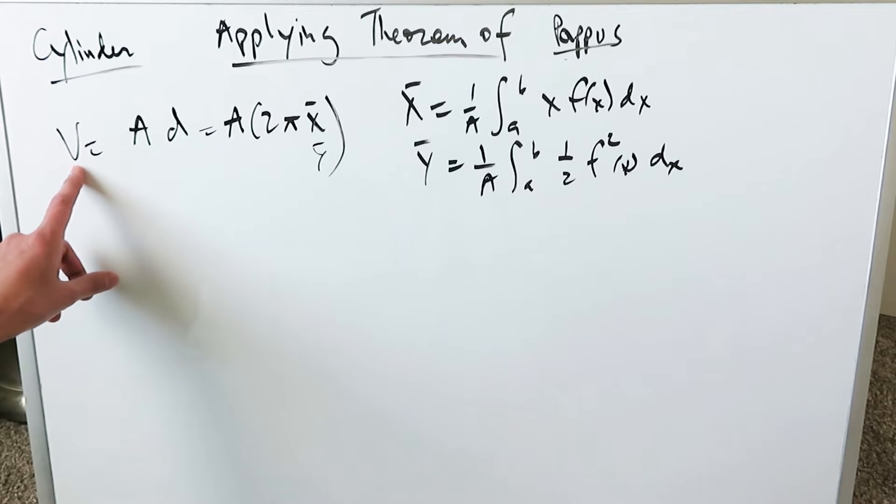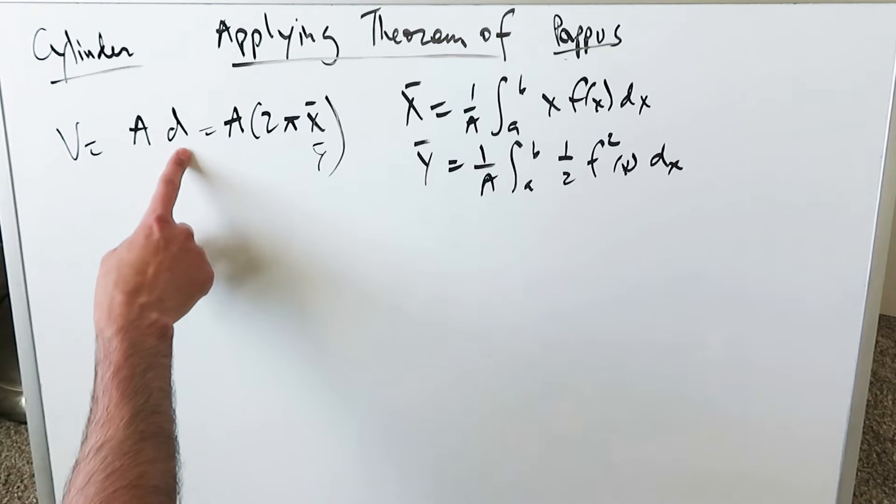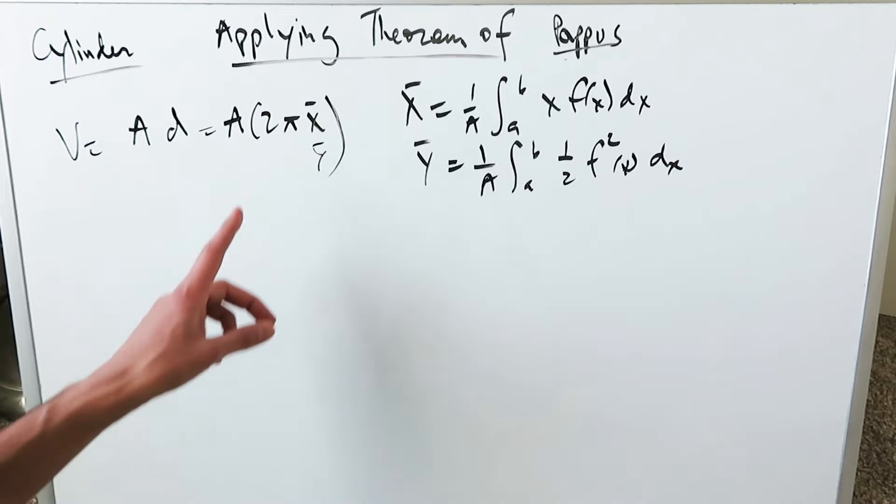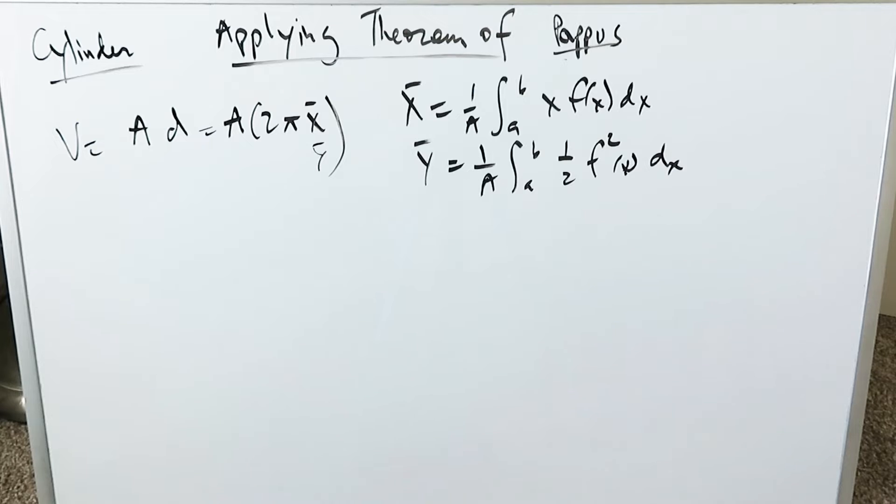I also have the basic definition of the theorem where you are taking a certain area and rotating it around a certain distance. Area times that distance. That distance can be 2π times the x value of that centroid or 2π times the y value of that centroid.